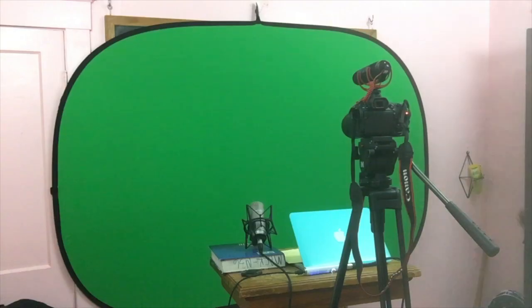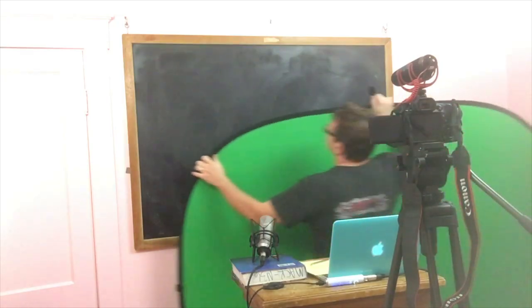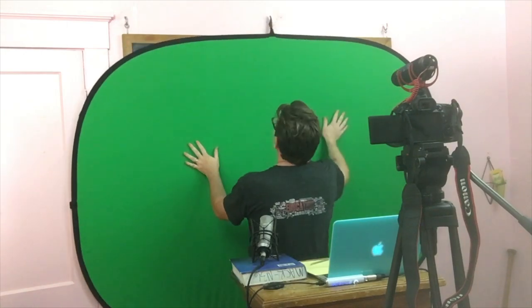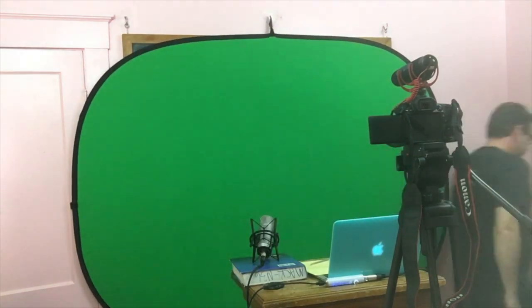We're about to show you how we go about on Hip Hughes History doing a video. The first thing I'm going to do is put my jacket on. Here we are standing in front of the camera — this is called the rule of thirds. You don't want to stand in the middle of your green screen. This green screen is just over a blackboard — it's on a hook and it just hangs right there.